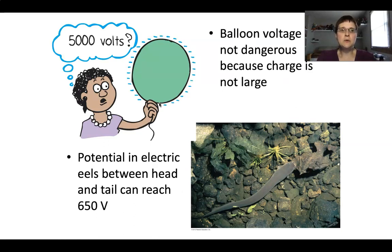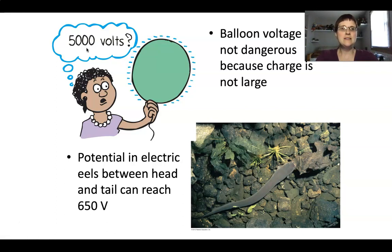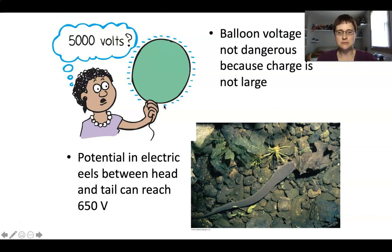A lot of people think that voltage is what's dangerous to us, but it's actually the current, because current is tied to how many charged particles like electrons are present. For example, rubbing a balloon on your hair provides a charge to that balloon — it has a high electric potential difference, about 5,000 volts. But the voltage on a balloon is not dangerous, because even though the voltage is high, the charge isn't large. There aren't that many electrons on the outside of the balloon, so it's not going to hurt you.